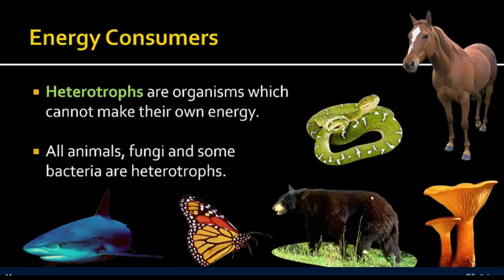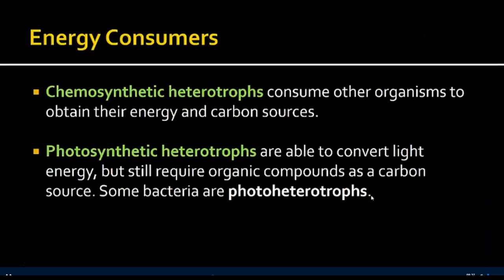Heterotrophs are organisms which cannot make their own energy — all animals, fungi, and some bacteria are examples. There are two types: chemoheterotrophs, which consume other organisms to obtain their energy and carbon sources, and photoheterotrophs, which are able to convert light energy but still require some organic compounds like carbon. There are some bacteria which are photoheterotrophs.